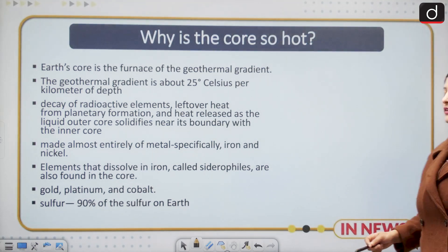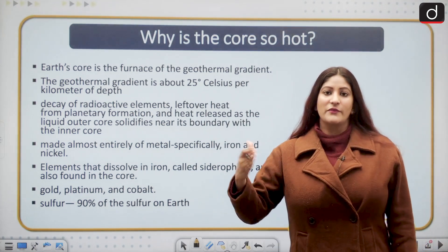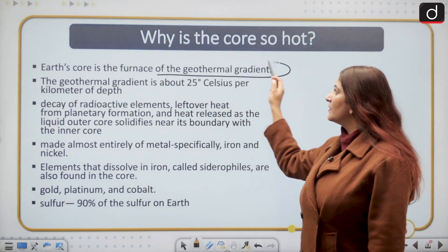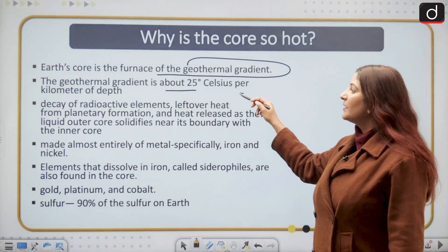Why is the core so hot? It must be important for you to know this from the perspective of analytical portion. Earth's core is basically the furnace of the geothermal gradient, and the geothermal gradient is about 25 degrees Celsius per kilometer of depth.